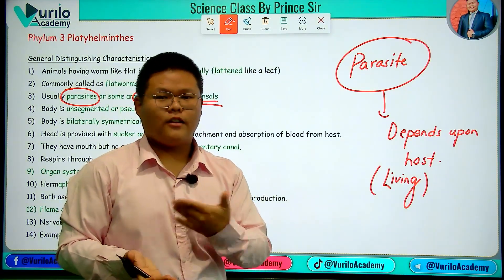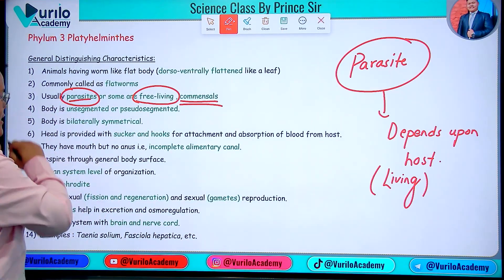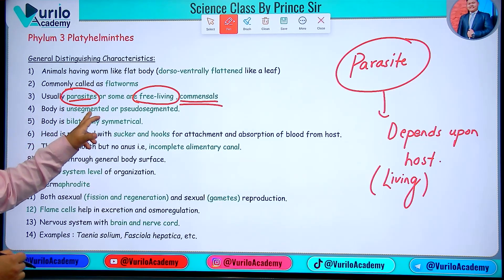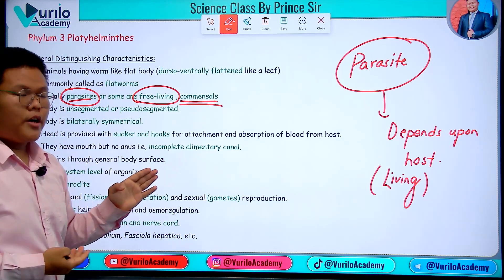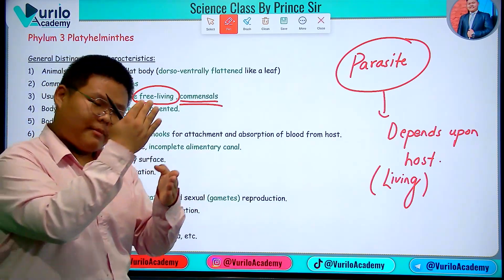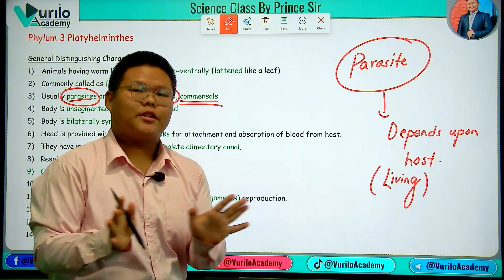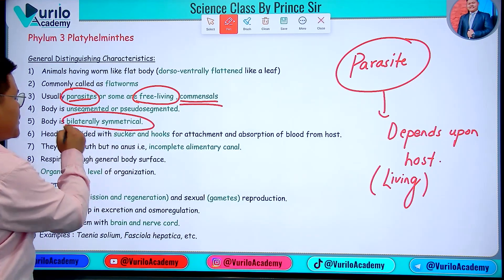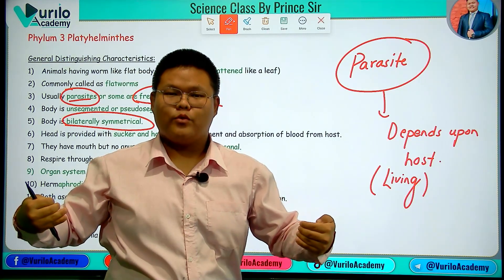Now you need to know parasitic adaptations and parasitic features. Bodies are unsegmented — though there can be pseudo-segmentation visible on the body. Bodies are bilaterally symmetrical.